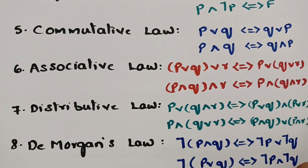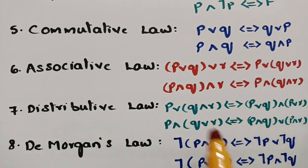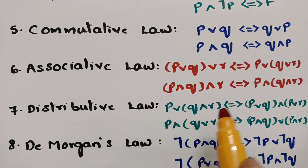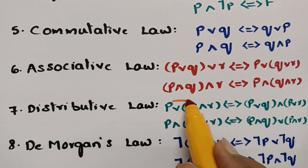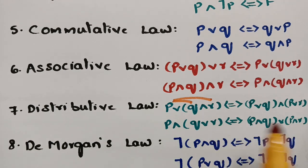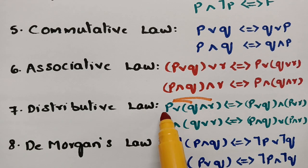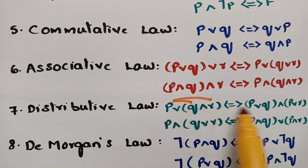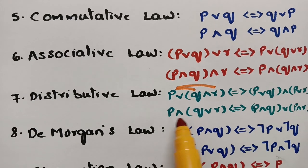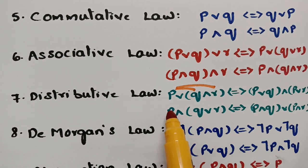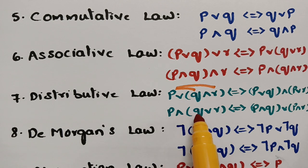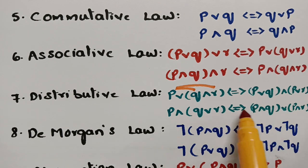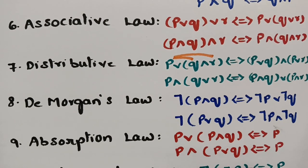Next is the distributive law. Here p is distributed to both q and r. So p AND (q OR r) equals (p AND q) OR (p AND r) — p is distributed to q and p is distributed to r. Similarly, p OR (q AND r) equals (p OR q) AND (p OR r). This is the distributive law.